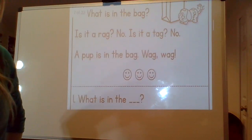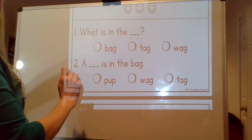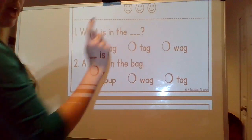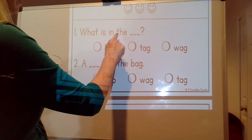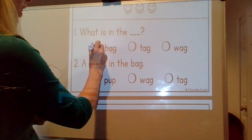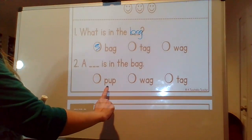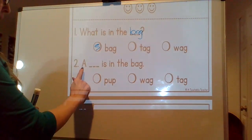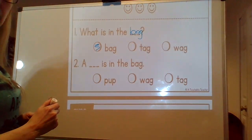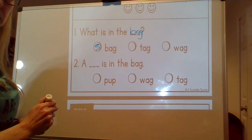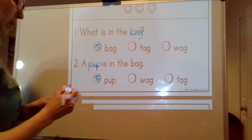Good reading. Let's look at the questions. Question number one — our choices are bag, tag, wag. What is in the blank? What is in the bag? What is in the wag? If you chose bag, you are correct — what is in the bag? Question two — our choices are pup, wag, tag. A blank is in the bag. A pup is in the bag. A wag is in the bag. A tag is in the bag. Which one goes with our passage? If you chose pup, you are correct. Pup. A pup is in the bag.